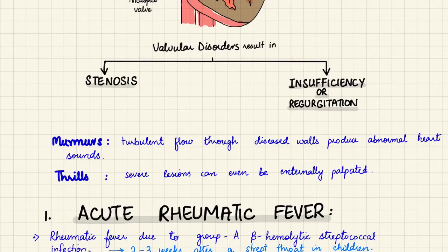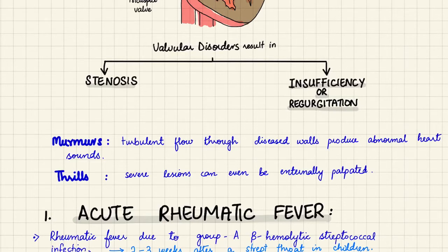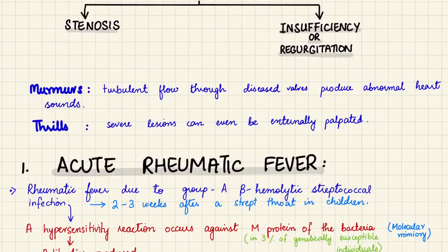The heart produces normal heart sounds S1 and S2 heard on auscultation. We'll discuss them in detail after covering each valvular disorder so they're easier to remember together. As an overview, murmurs are abnormal heart sounds produced when blood flows turbulently through a diseased valve. Thrills are caused by severe lesions that can even be externally palpated.